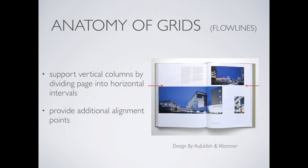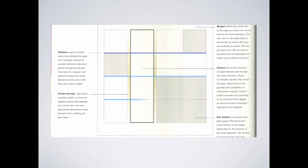Then we get something called a flow line. The first three elements — margins, columns, and column intervals — you're probably familiar with. A flow line you've seen before but probably didn't know what it was called. Essentially, you have vertical columns and you run a contrasting horizontal line across them at a specific place, which divides up the content of the page. In this example, you can see the columns and photographs, but there's one strong horizontal line running across — that is a flow line. It's generally consistent throughout your work and helps you organize information.